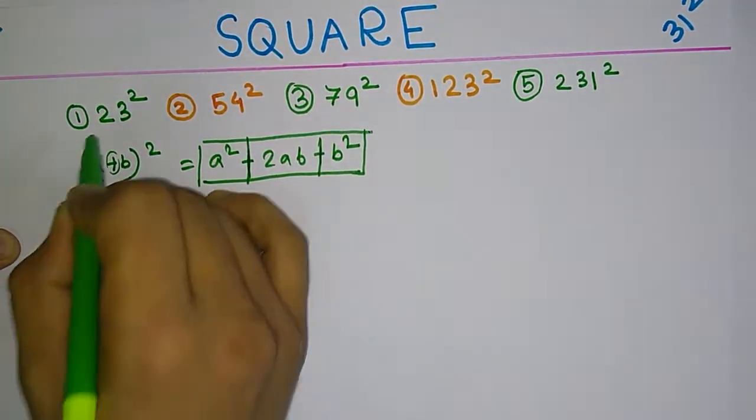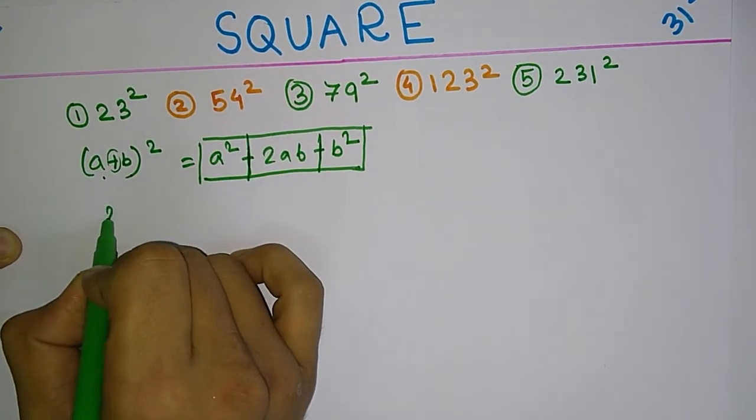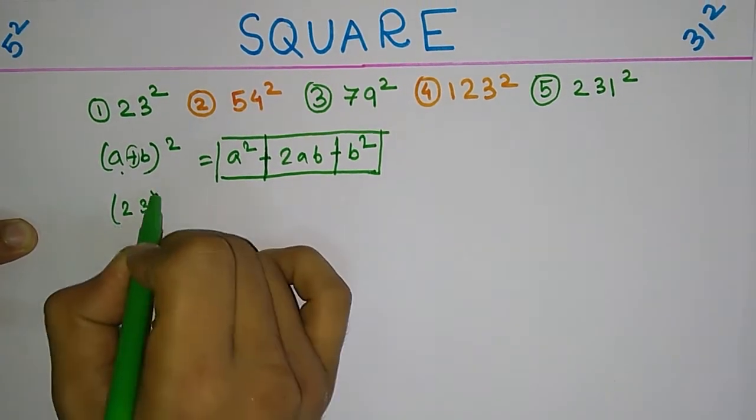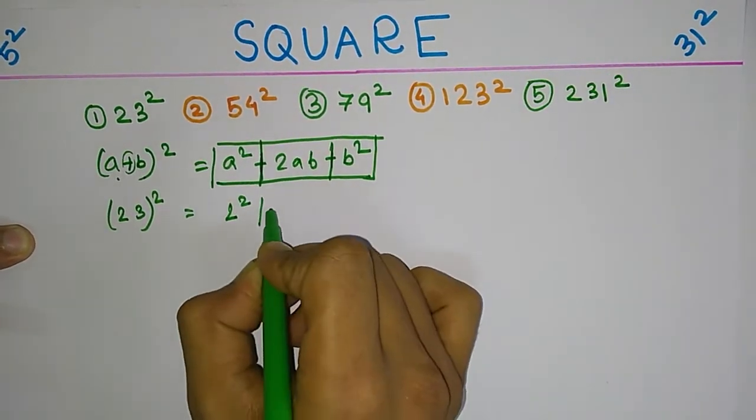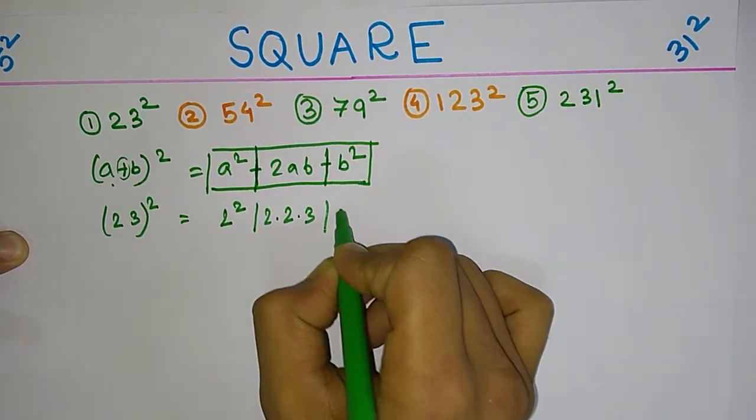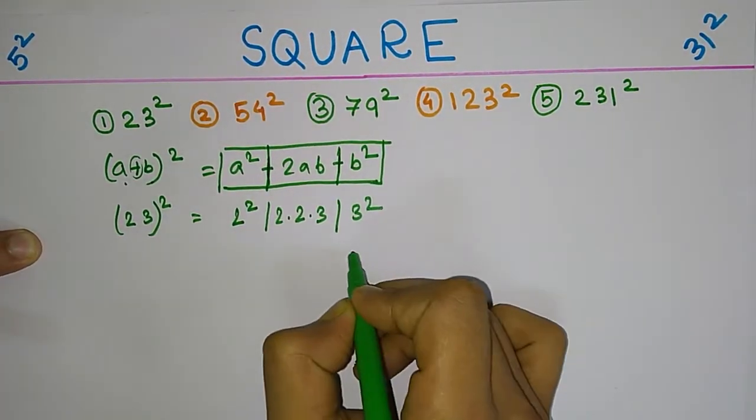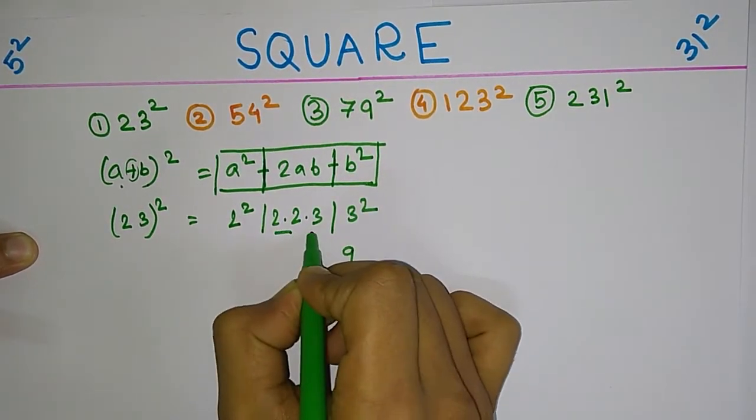So let's have an example: say 23. So it will be 2 square, 2 times 2 times 3, and then 3 square. So 3 square is 9, you know. 2 times 2 is 4, 2 times 3 is 6, which is 12, and 2 times 2 is 4.